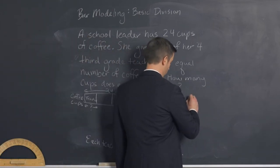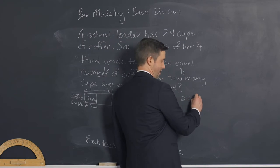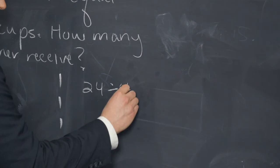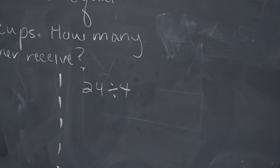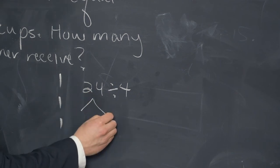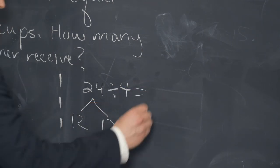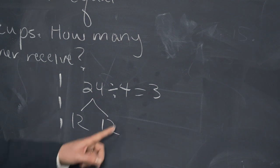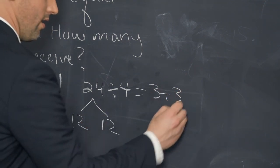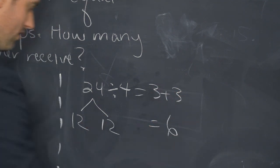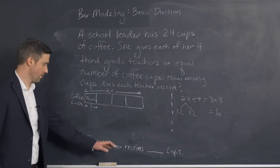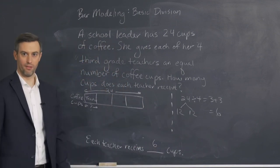So we're going to come over here and we're going to say 24 divided by four. If you have students that don't know 24 divided by four right off, they may know 12 and 12. So you can make this into a number bond. And 12 divided by four is equal to three. Again, plus three, which equals six. So each teacher receives six cups of coffee.